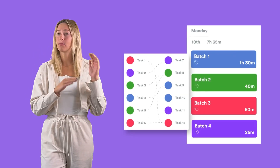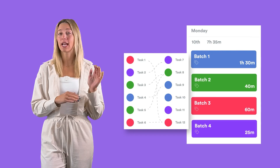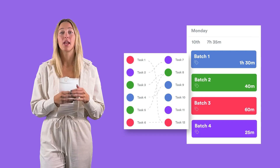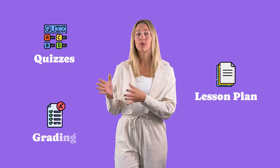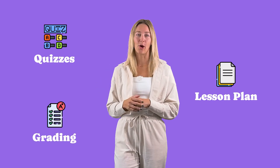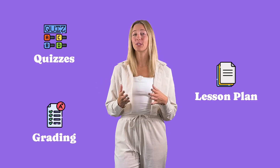Tip 6 is batch tasking, and this can be applied around your whole life. Set aside blocks of time to tackle similar tasks together, like grading or lesson prep. Create all of your lesson plans, generate quizzes, or tackle grading in one go, making it easier to stay organized and productive.